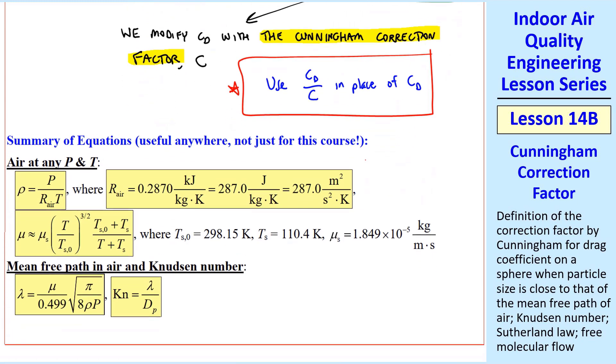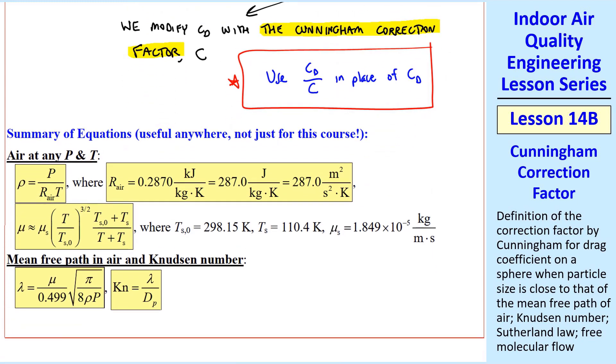First, I want to show the summary of equations for air at any pressure and temperature. We have the ideal gas equation with a specific gas constant for air in any of these three groupings of units. This viscosity equation is the Sutherland equation. This is the equation for mean free path for air and Knudsen number. So this grouping of equations is valid for air at any pressure and temperature. Notice that we need mu, density and pressure to calculate lambda, and we need lambda then to calculate the Knudsen number.